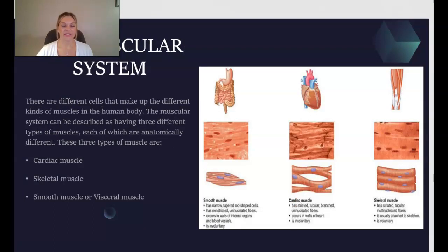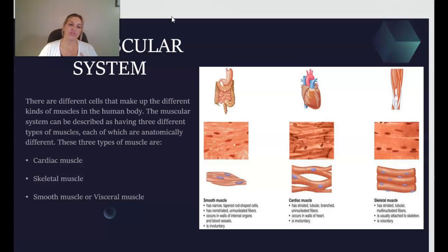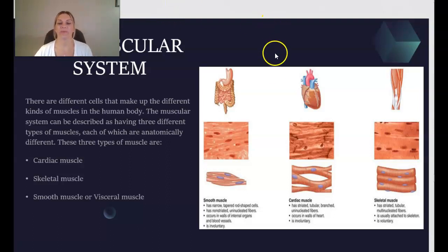The muscular system can be described as having three different types of muscles, all of which are anatomically different. These three types include cardiac muscle, skeletal muscle, and smooth muscle, otherwise known as visceral muscle. You can see the different cells that make up the different kinds of muscles in the body here in this diagram.